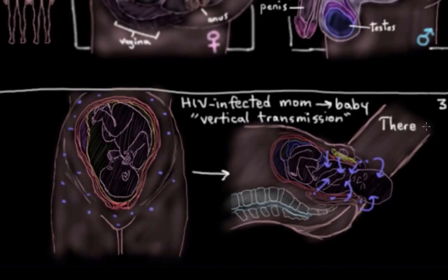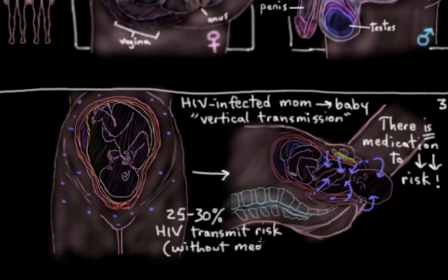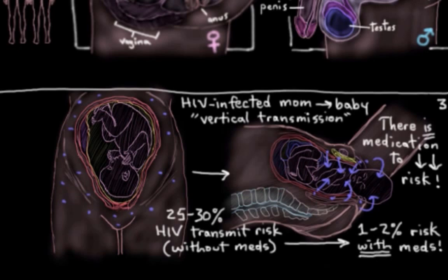Luckily, there are medications that can be given to mom before and after her pregnancy and labor, and medication the baby can take as well. All of that drastically reduces the risk of mom passing HIV on to her baby — from a risk of about 25 to 30% without medication, all the way down to only about 1 to 2% with medication, which is around a 20-fold reduction.